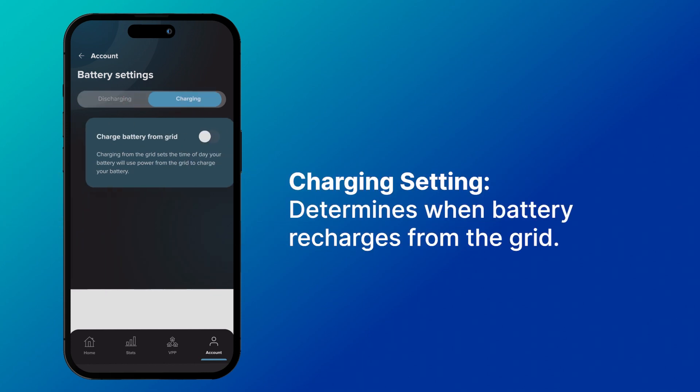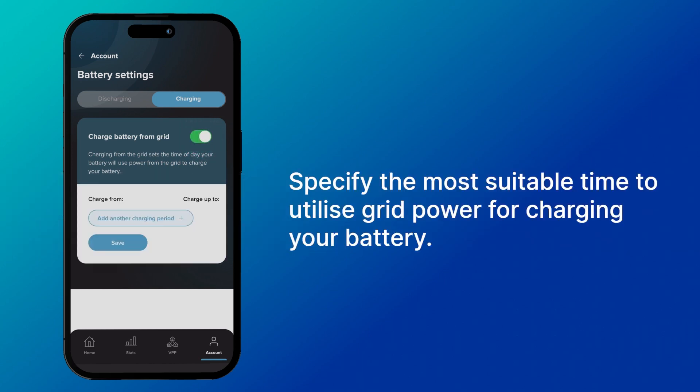Charging setting: the charging setting determines the time of day when your battery will draw power from the grid to recharge itself. By setting the charging schedule, you can specify the most suitable time to utilize grid power for charging your battery.